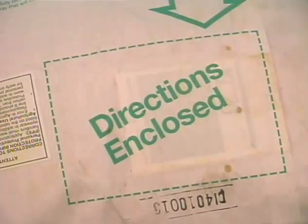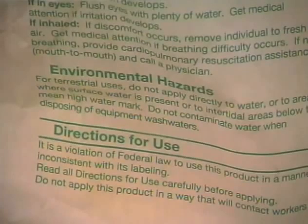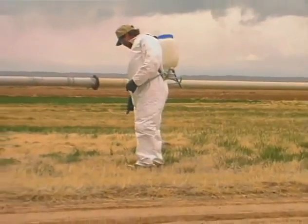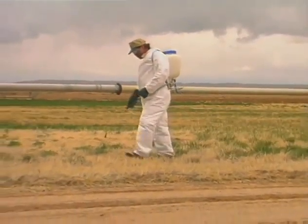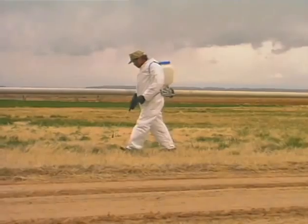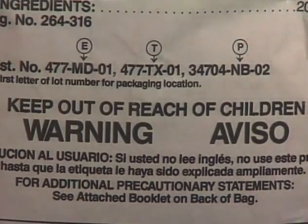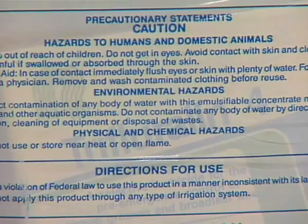The single most important step in using pesticides is to always read the label and follow the directions on the label exactly. You are responsible by law for any damage caused by pesticides to people or property. By reading the label on the pesticide container, you will have all the information you need to protect yourself and others.